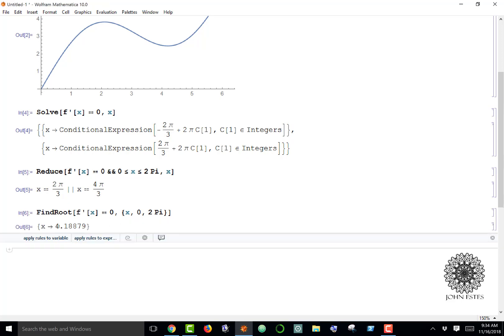When I find that, I get 4.18879, which is right in here—that's the 4 pi over 3—but notice it only found one of them and it found it in a decimal form because it's using some numerical expression.